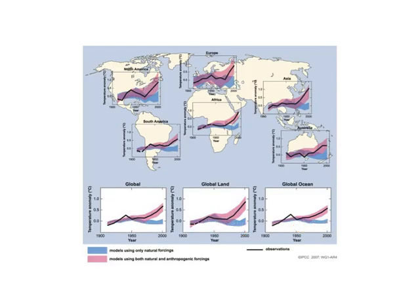In the pink in each case, the model has been told what nature did and what humans did. And what you will see — starting with the global land, for example — is that the warming back here is plausibly caused by nature. The sun got a little bit brighter.